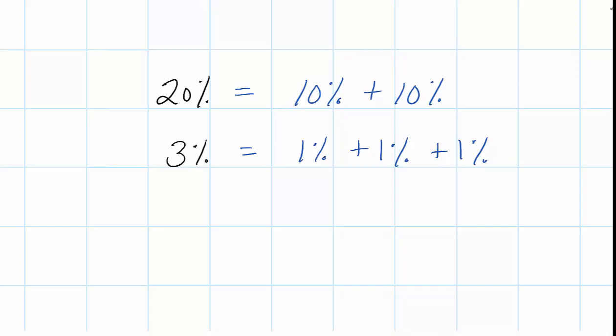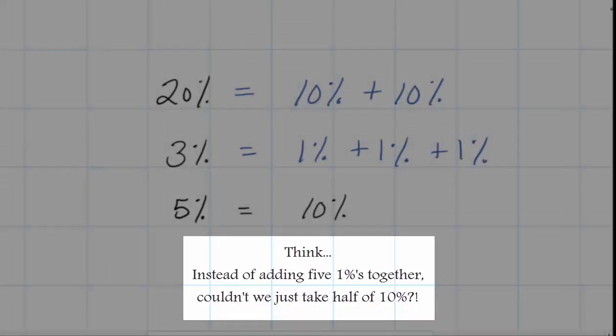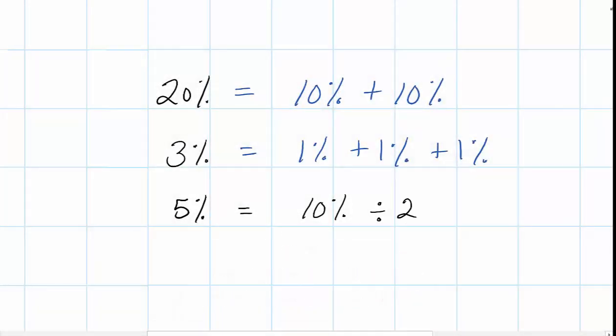So three 1%s is the same thing as 3%. Two 10%s would give us 20%. In order to find 5%, that's the one where I'm a little bit lenient in my rule of just adding. For 5% of a number, we could basically just take 10% and cut it in half. So whatever 10% of a number is, if we take that and divide it in half, we would be able to get 5% at that point.